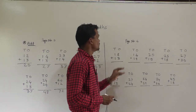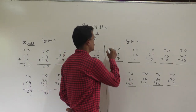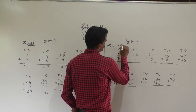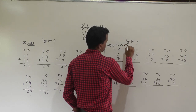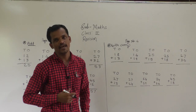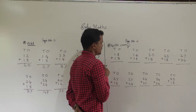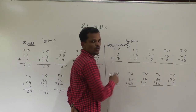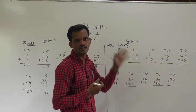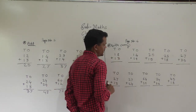Now page number 6 — these are addition examples with carry. Starting with 18 plus 13, begin from the ones place. 8 plus 3: count forward 3 fingers after 8 — 9, 10, 11. So 8 plus 3 equals 11.